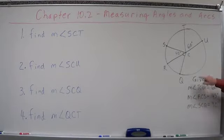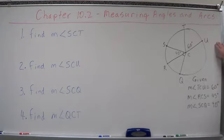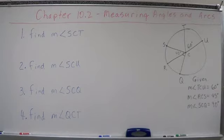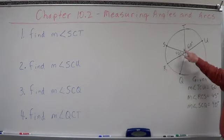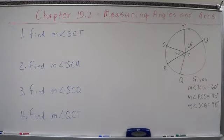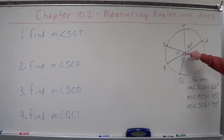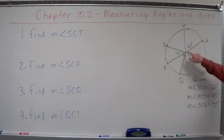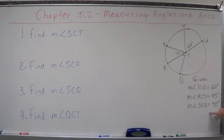So we're given that the measure of angle TCU is equal to 60 degrees, so we put that in there. We're also given that the measure of angle RCS equals 45 degrees, and we're given this little box here. And what does that mean? That's right. That means the measure of angle SCQ is 90 degrees.